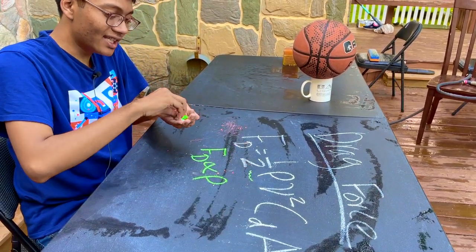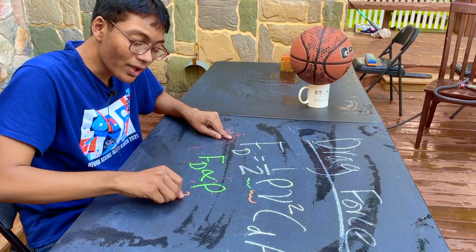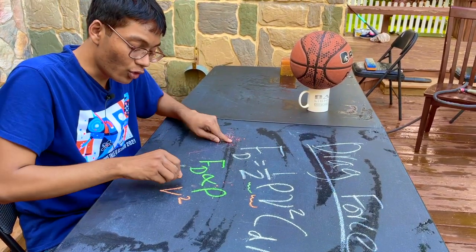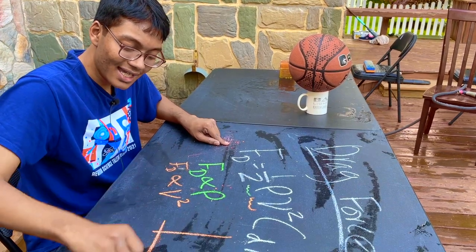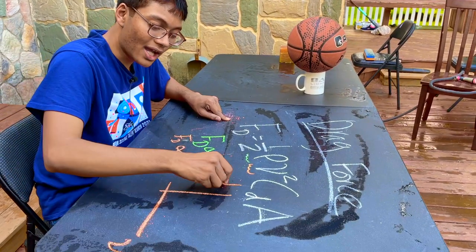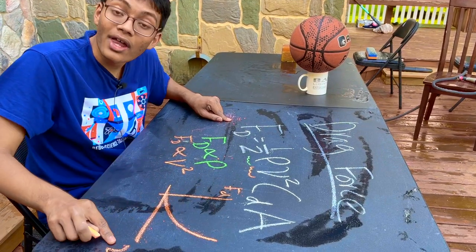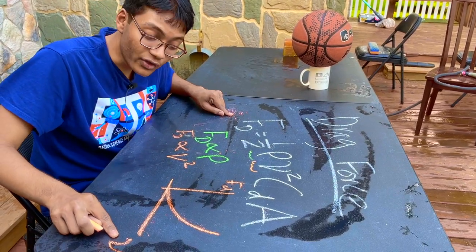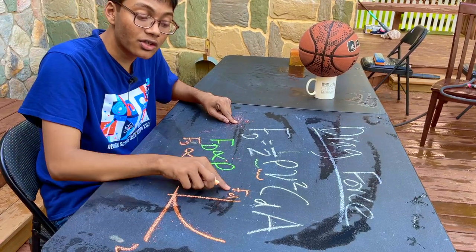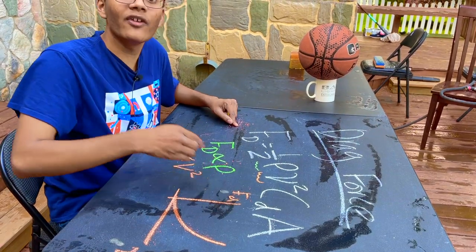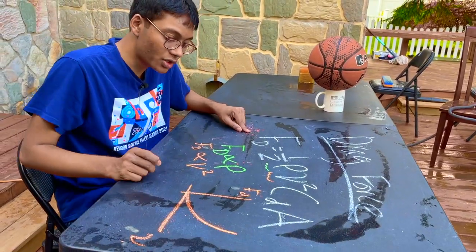The next factor is your velocity. The faster you're going, the greater your drag force. In fact, we can make a graph — your velocity and your drag force are quadratically related. If your velocity is two times greater, your drag force is going to be four times greater because of that square factor, because of this quadratic nature.